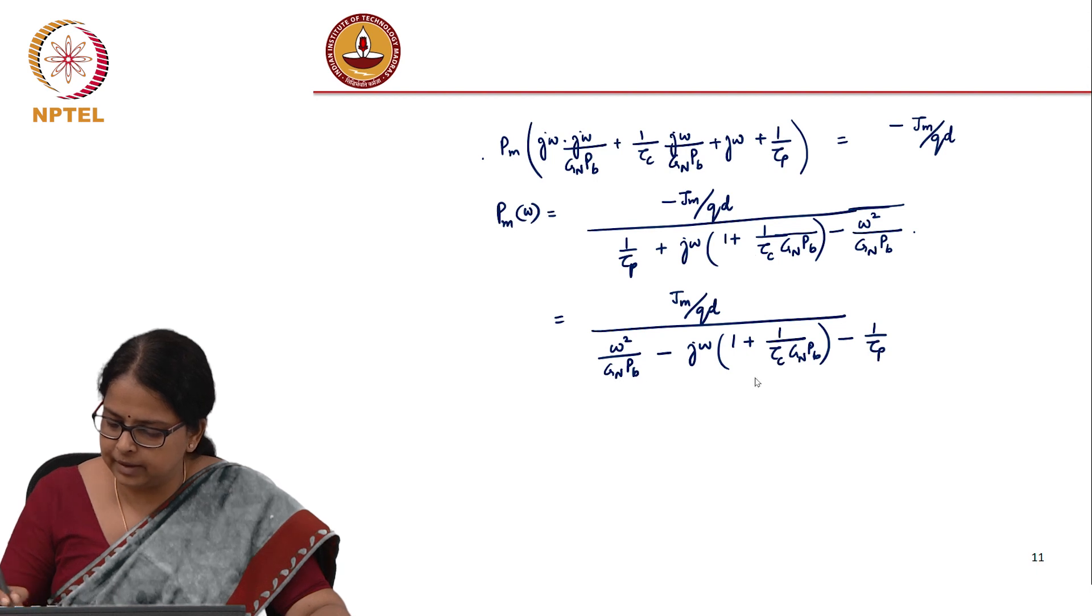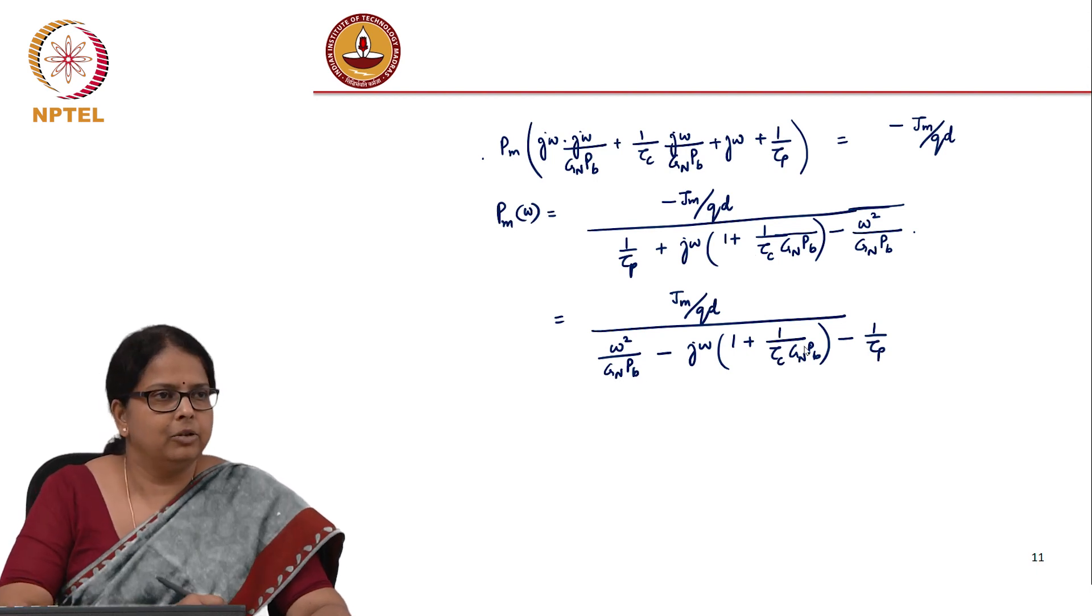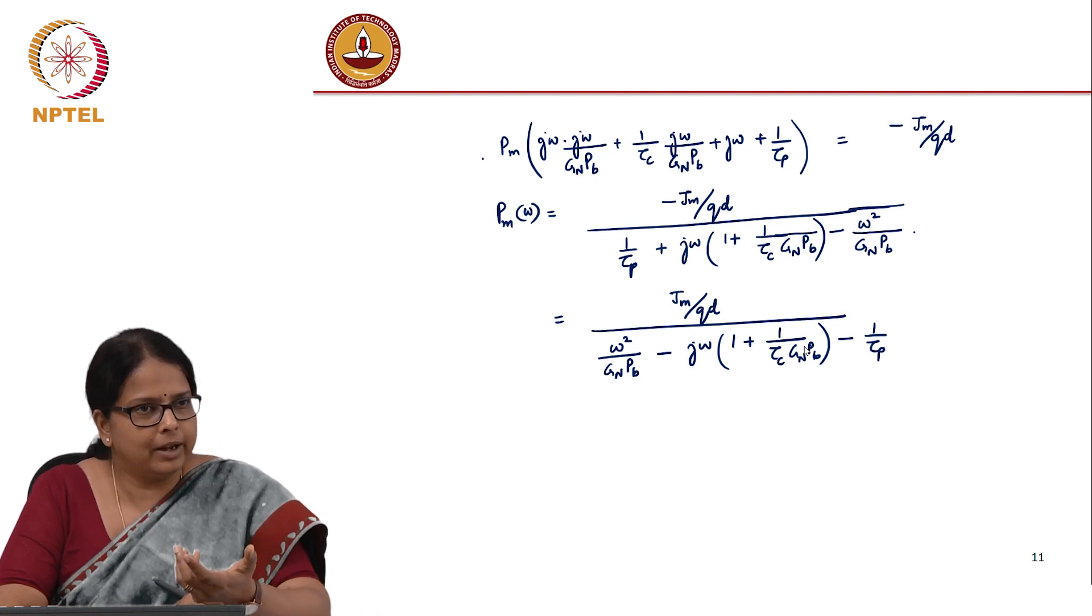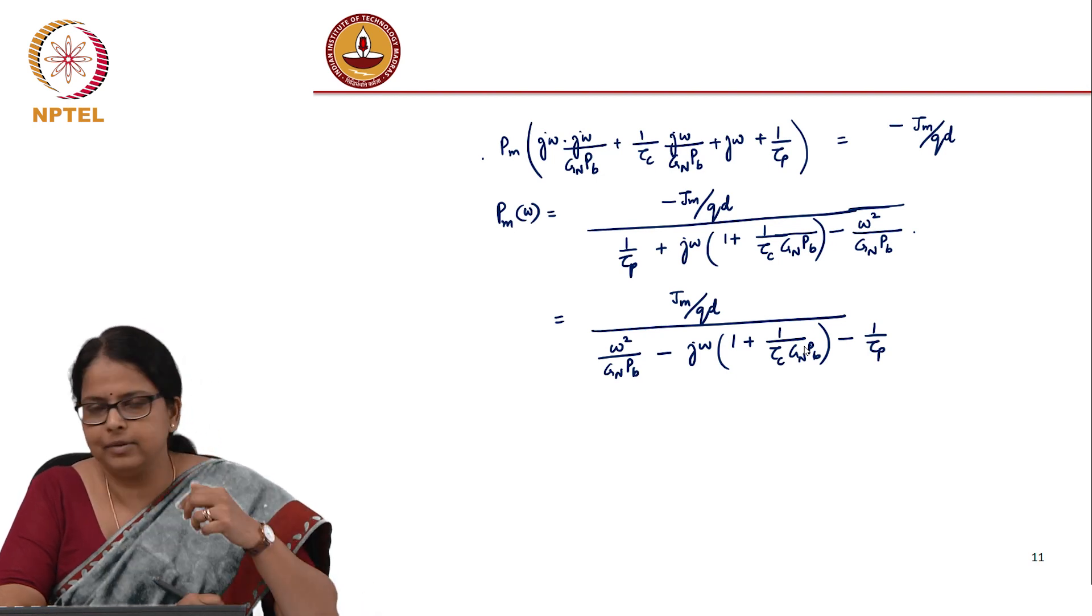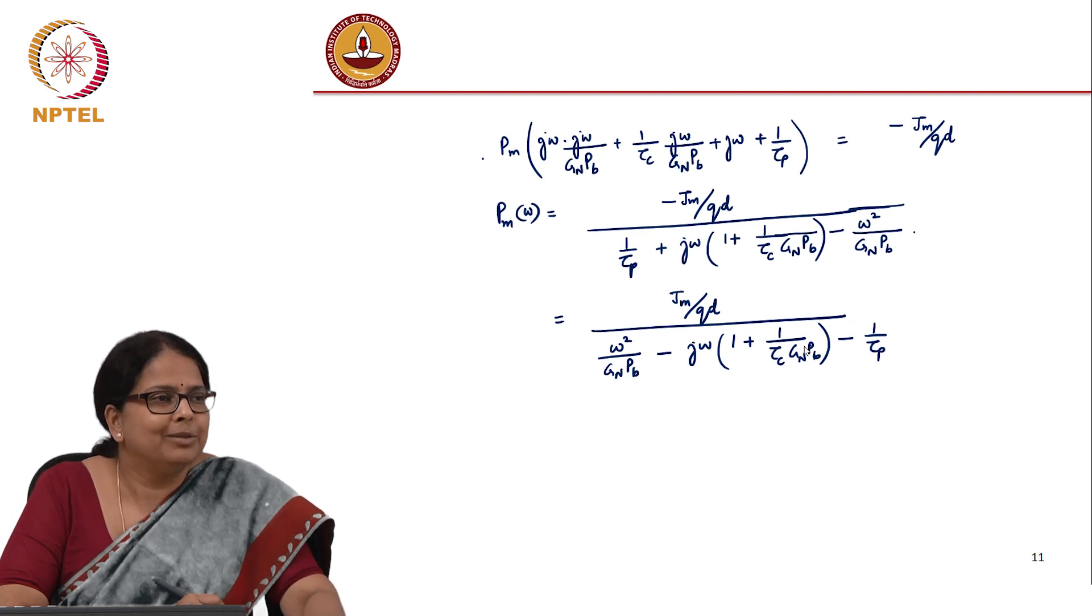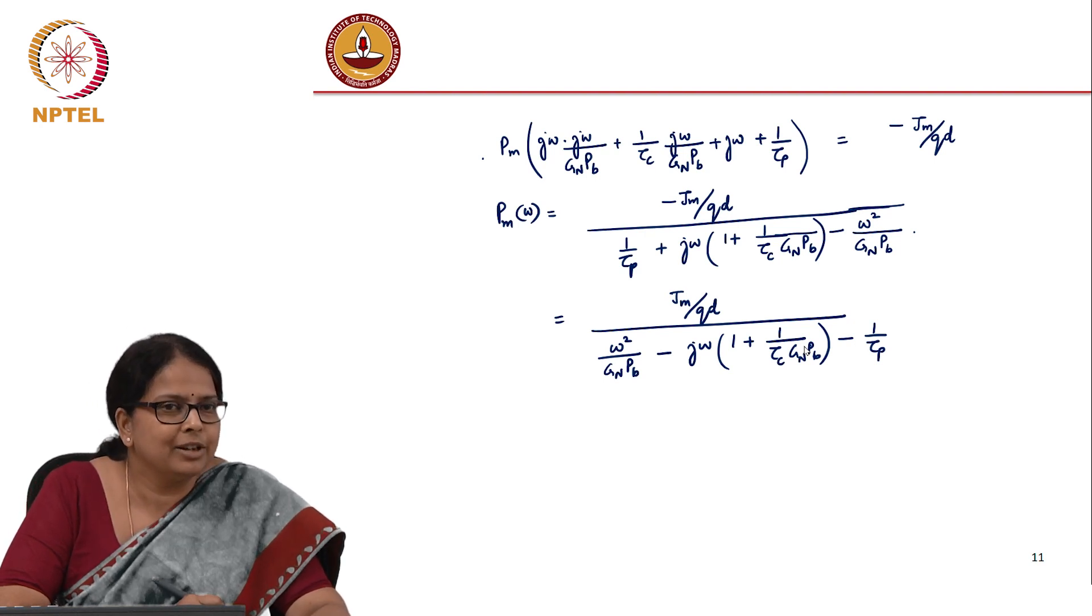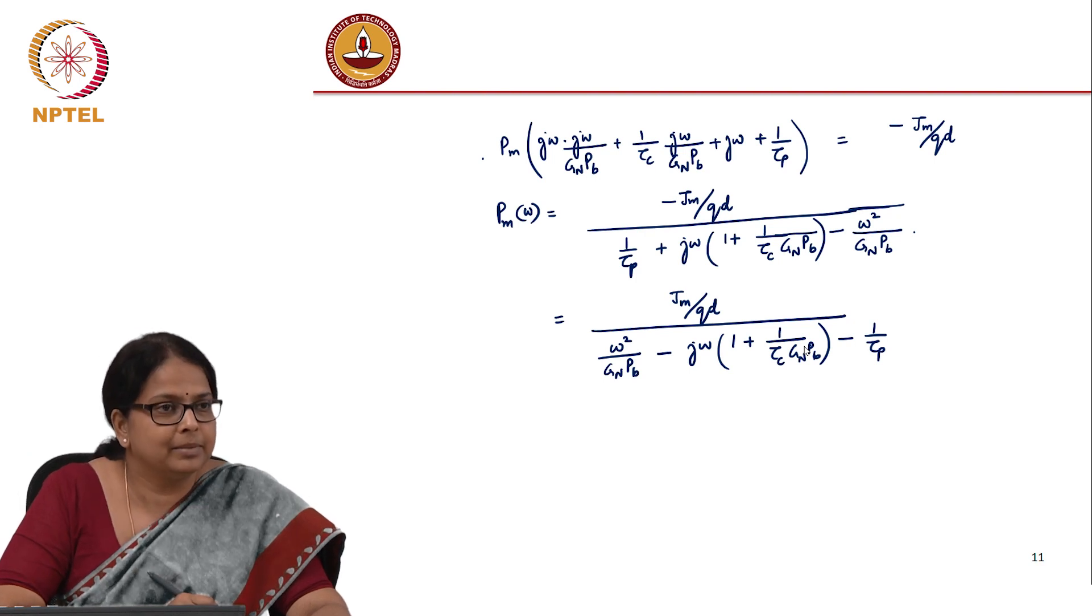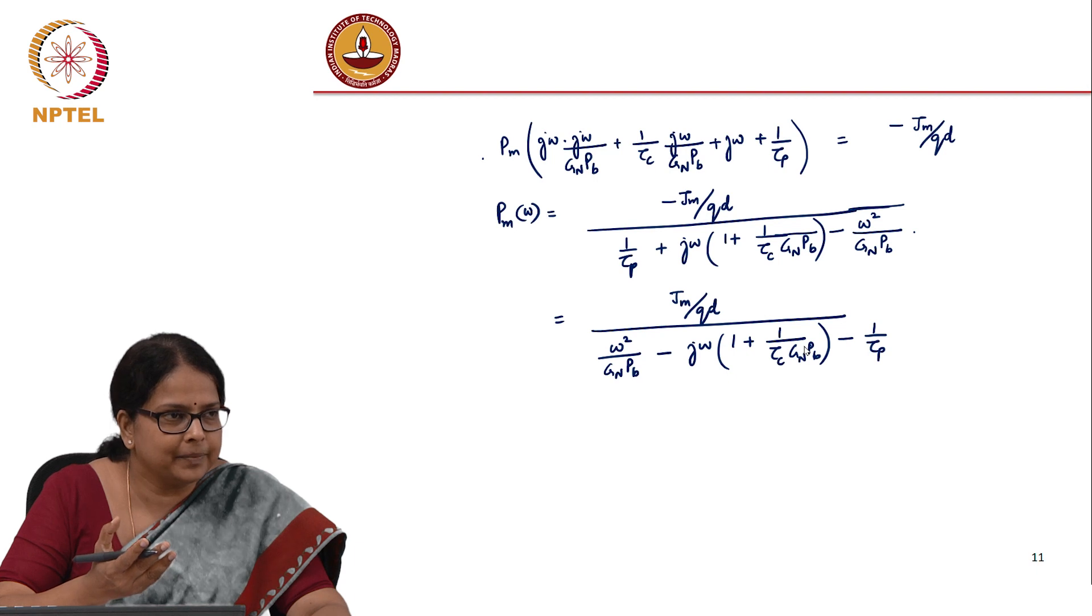You can multiply every term by g_n*p_b. If you have a transfer function like this, you have an omega squared, you have an omega, and you have a constant. It is a second order transfer function. What is the meaning? It will have an oscillation, there will be some resonant frequency for the system. You could find a resonant frequency.